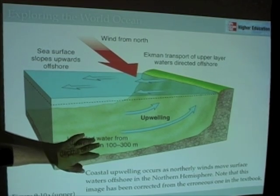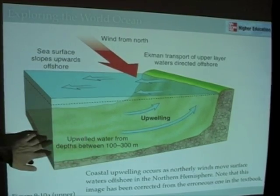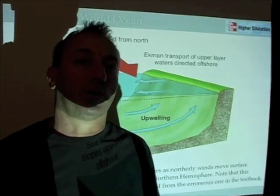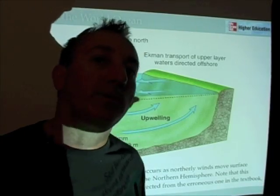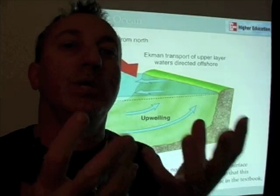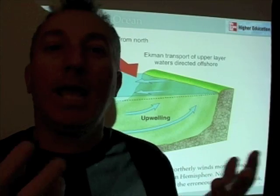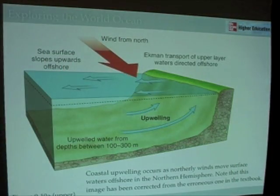This upwelled water is coming from fairly shallow depths — not from the bottom of the ocean, but importantly from depths beneath the photic zone, where phytoplankton haven't been growing. Because of that, that water is full of nutrients. As upwelled water reaches the surface and mixes with surface waters, those surface waters become replenished with nutrients, leading to a bloom of phytoplankton. That's why upwelling is such an important process in ocean productivity.